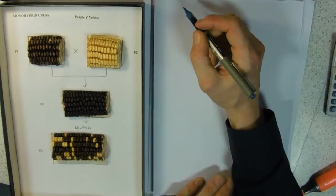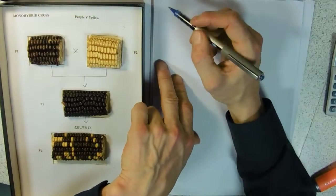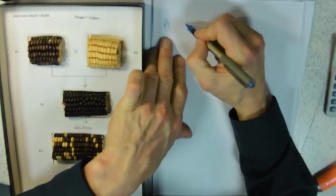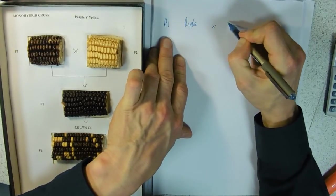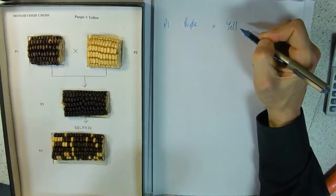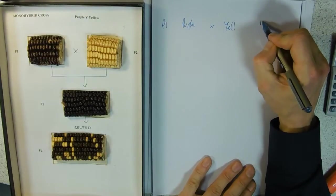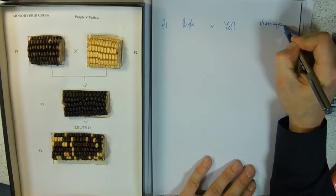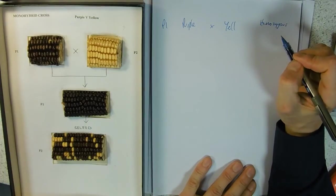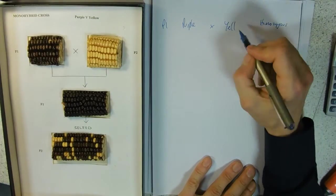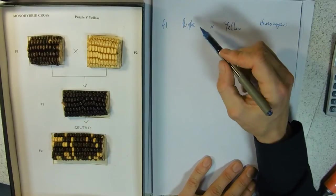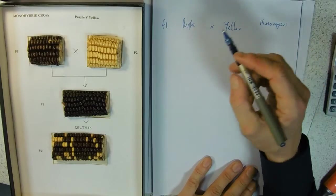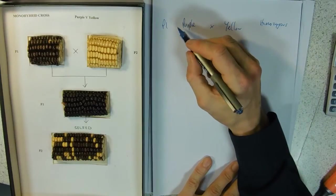What cross have we got here? These are our parents - we have a purple times an entirely yellow. These are homozygous or pure breeding. The phenotypes are purple and yellow.